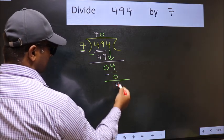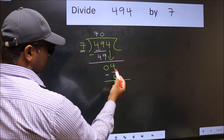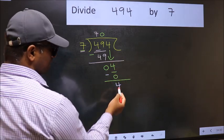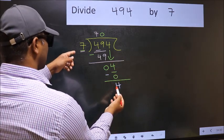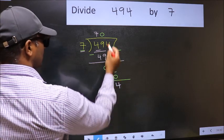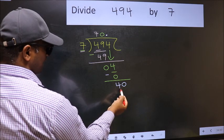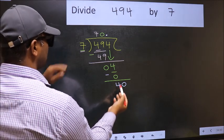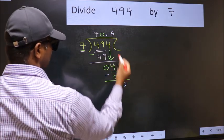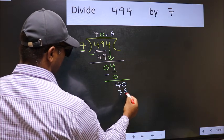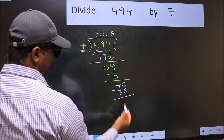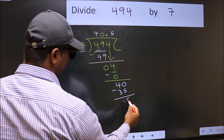Over here, we did not bring any number down, and 4 is smaller than 7. So now you can put a dot and take 0, so 40. A number close to 40 in the 7 table is 7 times 5, which is 35. Now you should subtract: 40 minus 35 is 5.